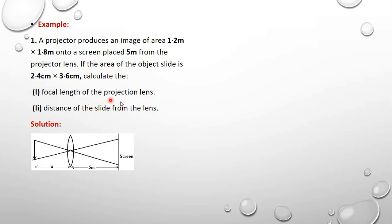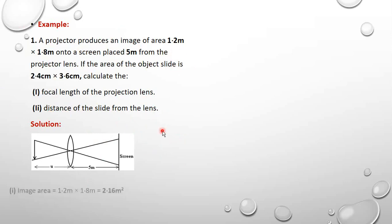First of all, we know that using this information we can get the magnification. Since we also know M = V/F − 1 and we have the distance V between the lens and the screen, we can get F. So first of all, the image area is 1.2 × 1.8 = 2.16 m².